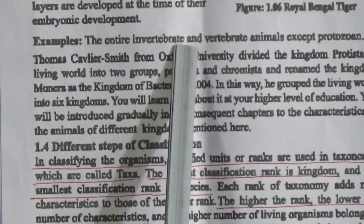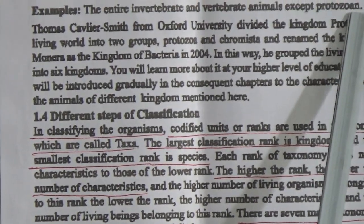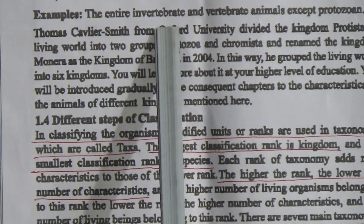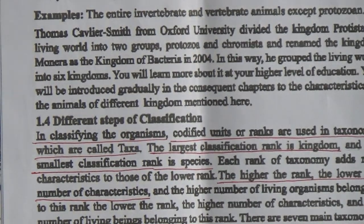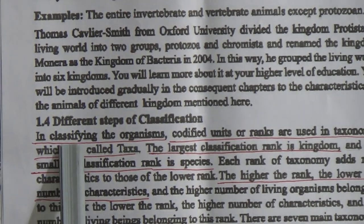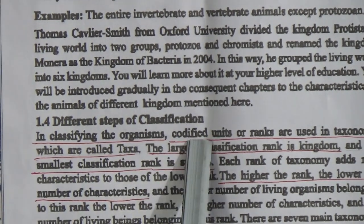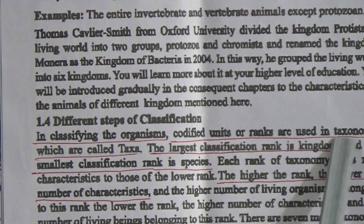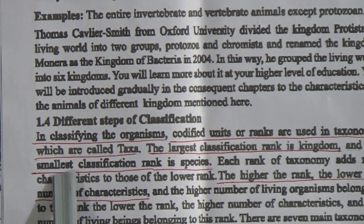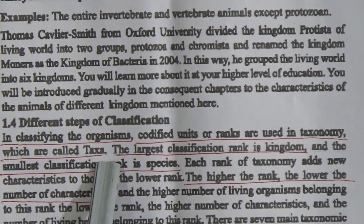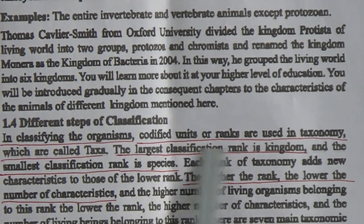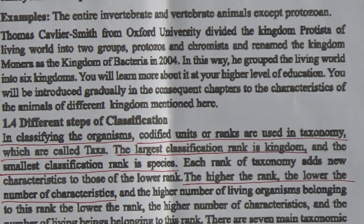Example of Animalia: the entire invertebrate and vertebrate animals, except protozoan. Now, the different steps of classification: in classifying organisms, codified units or ranks are used in taxonomy, which are called taxa. In general, they are called taxonomy, but in singular form they are called a taxon.